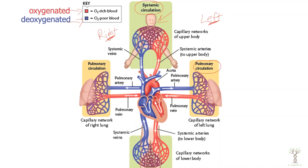When oxygen binds to the hemoglobin in the red blood cells, it causes the blood to look a brighter red. The blood in our veins is not actually blue — it just looks a darker red compared to oxygenated blood. Blood coming back to the heart from the body moves toward the right side of the heart, flowing through the upper veins from the upper body.